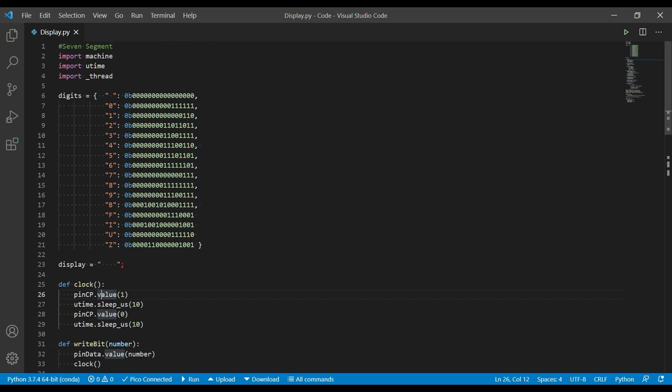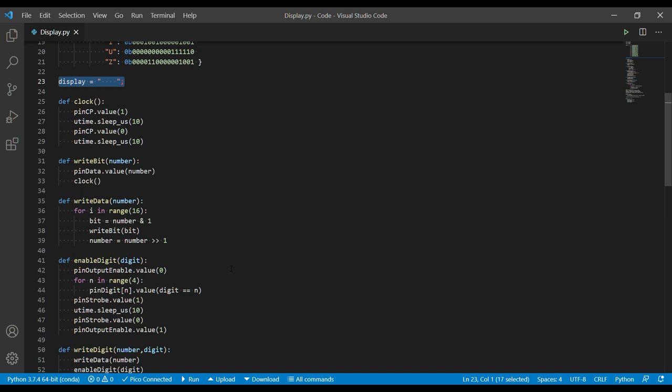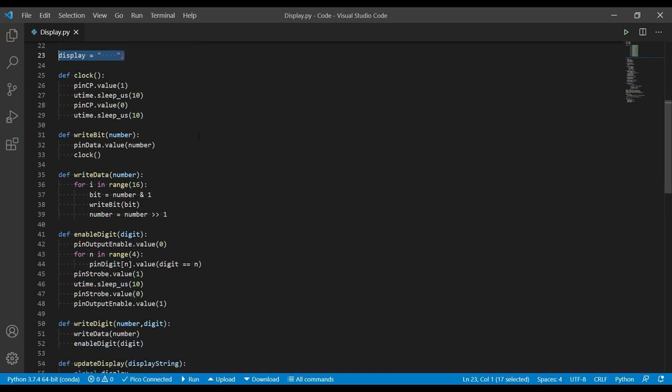So first we define the digits. These are all the different segments that need to light up for each of our displays. And our initial value for the display is effectively four spaces. Next we've got some functions that handle the interaction with the shift register.